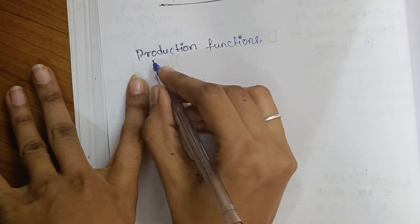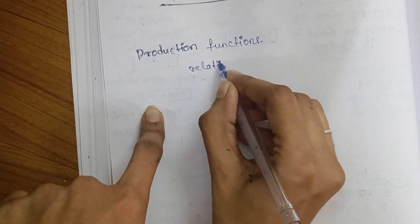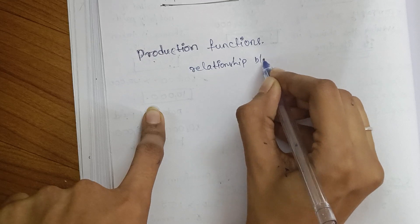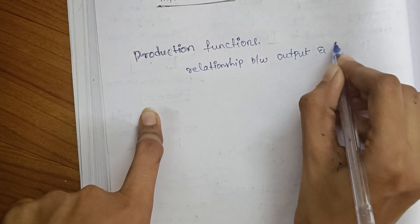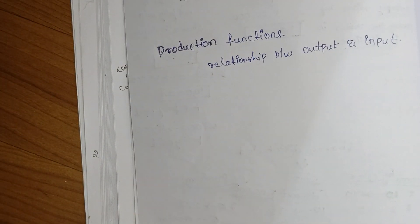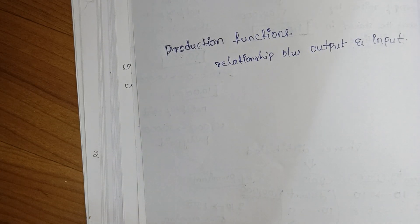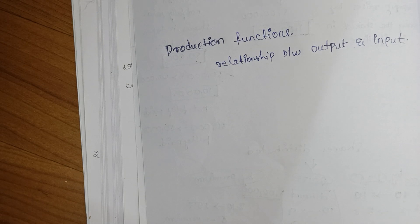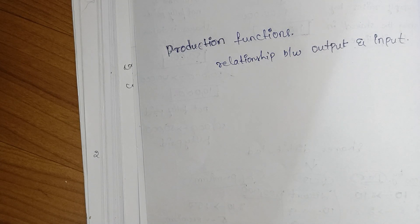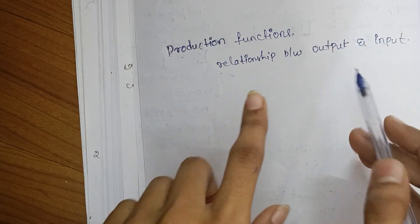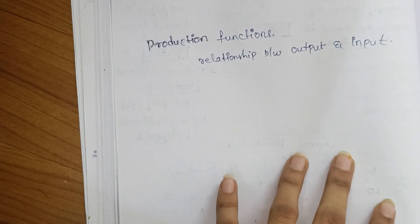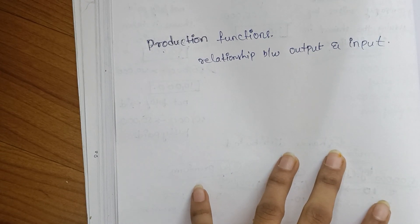How is production going to be expressed? The production function expresses the relationship between output and input. If there is an input, we expect some output. For example, in a wooden chair factory, the inputs include wood, coloring materials, workers, capital, organization, and labor. The quantity we get after combining all these inputs is called the output. The relationship between output and input is expressed as the production function, considered over a particular time period.